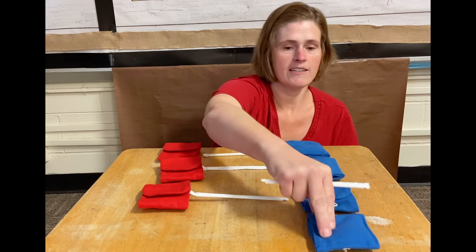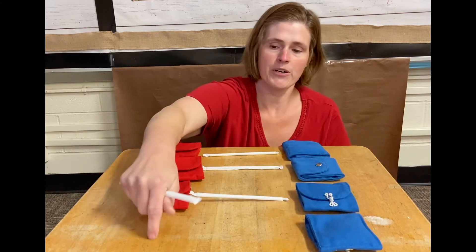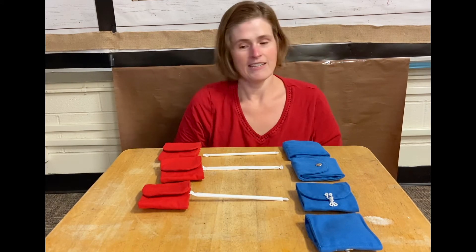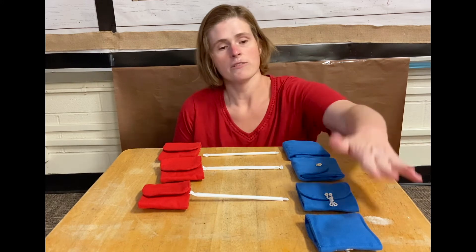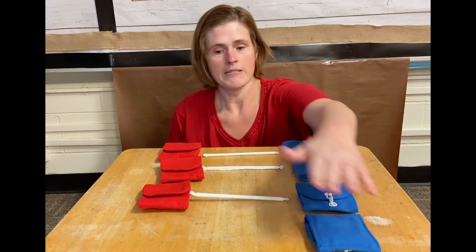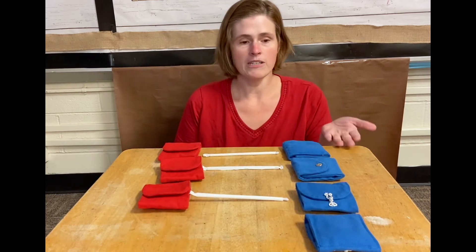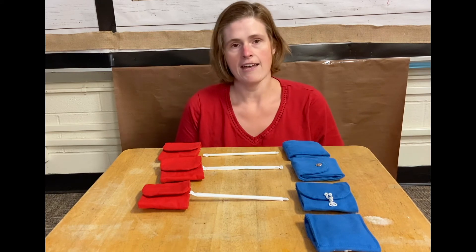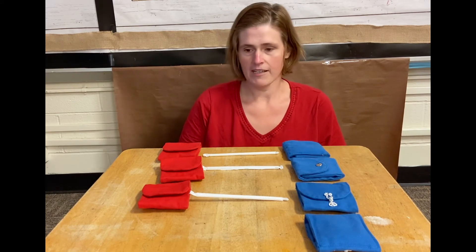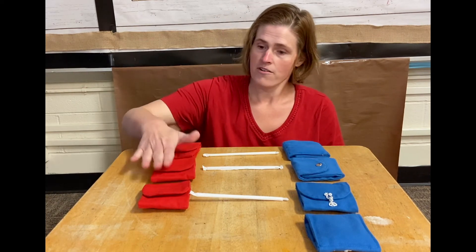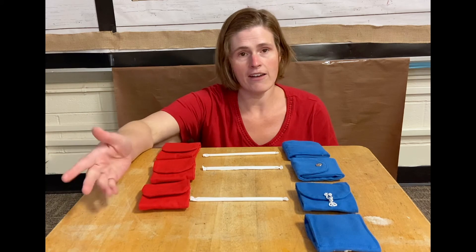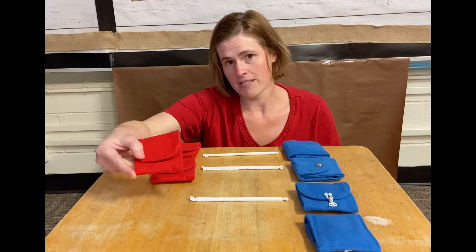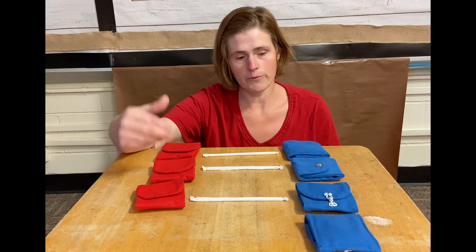Does this last blue one have a partner over here? That's right, it does not. So when we have extra pieces that do not have a partner, we know that this line has more. And over here we do not have any extra pieces, so that means our red one has fewer.